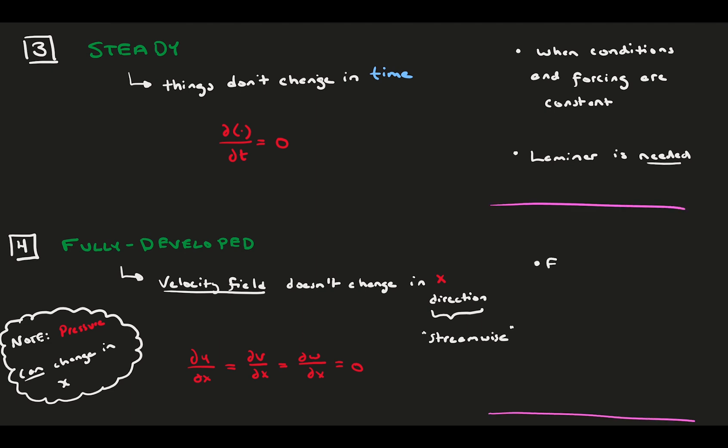This happens in enclosed flows specifically, like pipes and channels. Enclosing the flow limits the flow's ability to grow, which drives it to become developed and balanced in the streamwise direction. Also, generally you need flow to be laminar to be instantaneously fully developed.